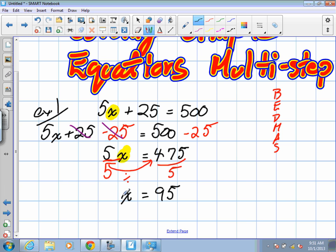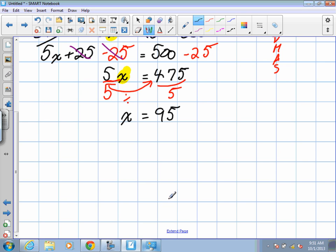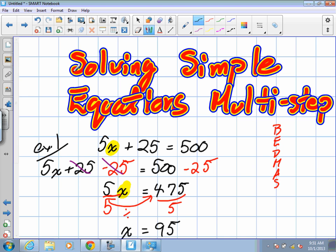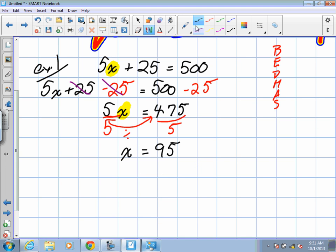So in this question, x equals 95. We'll do another example of a different way to do this, using opposite operations.